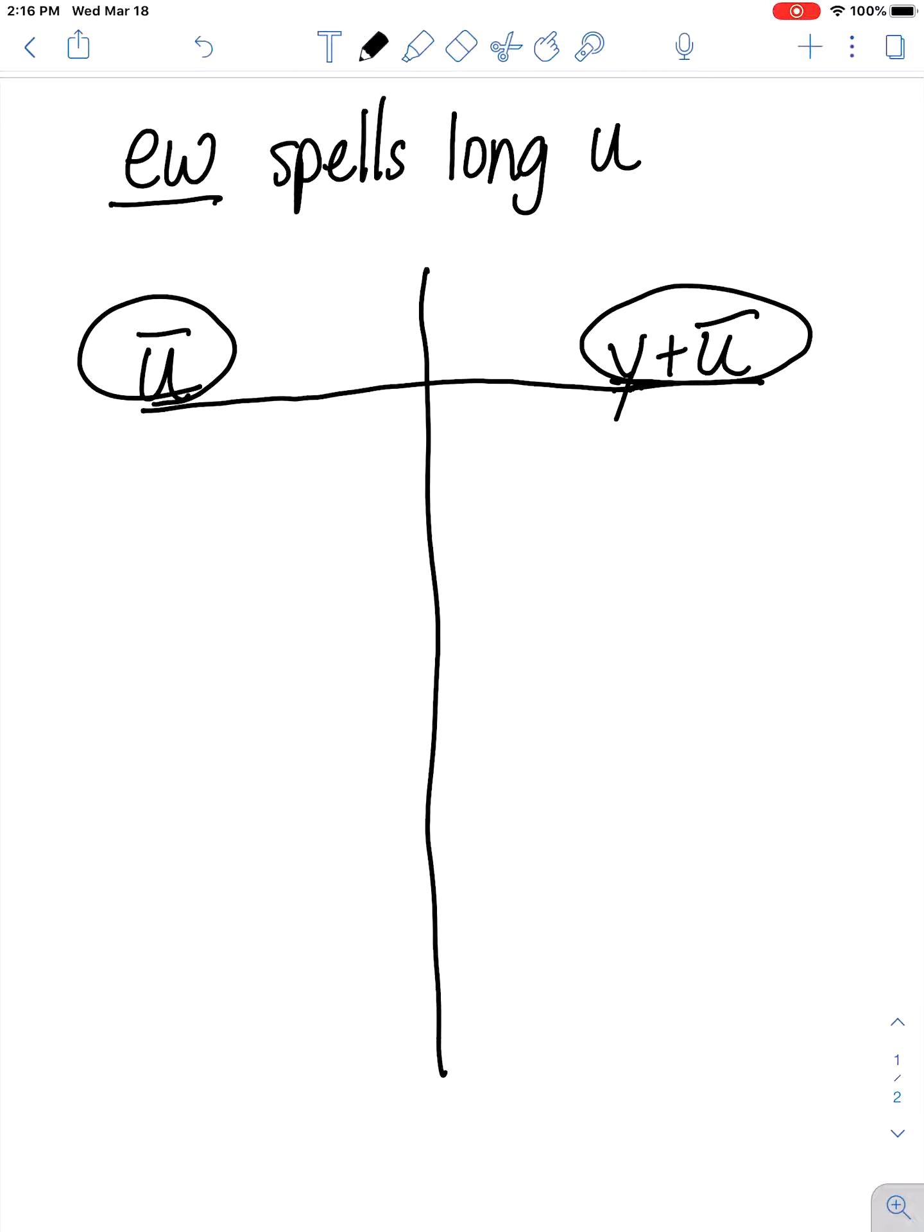Let's talk through some examples of EW words that say either ooh or you. One example of a long u word that uses EW to spell ooh is the word blew. She blew her nose. You can see EW saying the sound ooh in that word.